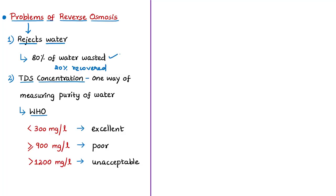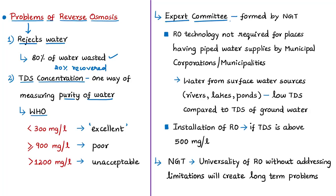Another reason for the NGT order relates to TDS levels, which measure water purity. TDS in water comprises inorganic salts and small amounts of organic matter. The WHO prescribes TDS below 300 mg/L for excellent drinking water quality, considers 900 mg/L poor, and above 1200 mg/L unacceptable. According to the expert committee constituted by NGT, RO technology is generally not required for piped water supplies from municipal corporations, as surface water sources like rivers and lakes have lower TDS than groundwater.